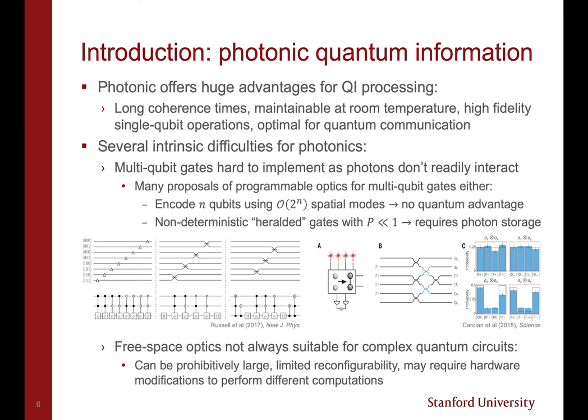Photonics offers a wide array of advantages as a substrate for quantum information processing. Photons have long coherence times, photonic states are maintainable at room temperature, one can easily perform high-fidelity single-qubit operations using a variety of methods, and photons are optimal for quantum communication between distant nodes in a quantum network.